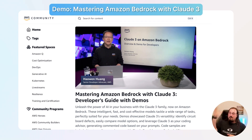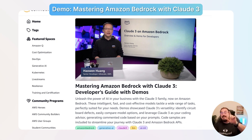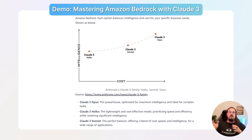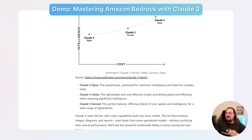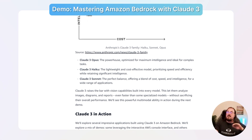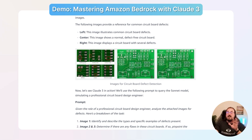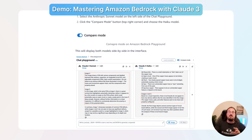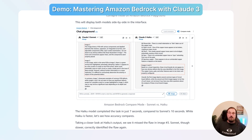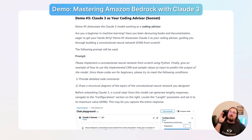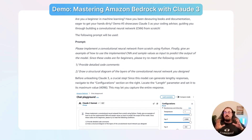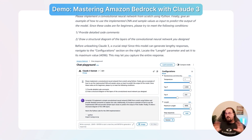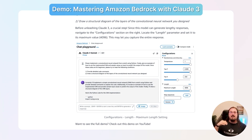Let's take a look at this. Here we are on the webpage — Mastering Amazon Bedrock with Claude 3, a developer's guide with demos. They're talking about the Claude 3 model family, which includes Haiku, Sonnet, and Opus, with 200,000 token models and smaller token models. There are three demos: number one is circuit board defect detection using Sonnet; number two pits Sonnet against Haiku; and number three uses Claude as your coding advisor using Sonnet. Opus is for deep analysis, Haiku is faster, and Sonnet is a blend of the two — in the middle between deep analysis and responsiveness.